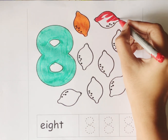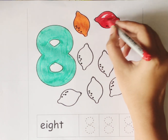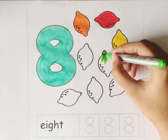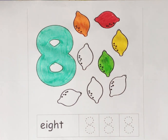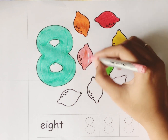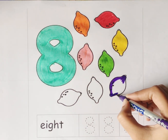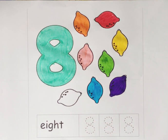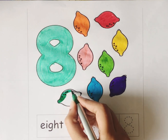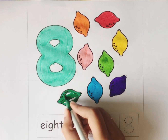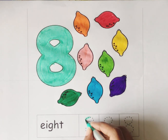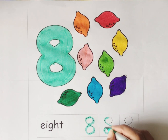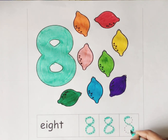Red. Yellow. Green. Light green. Baby pink. Pink. Violet. Sky blue. Green color. Let's trace the number 8. Number 8.